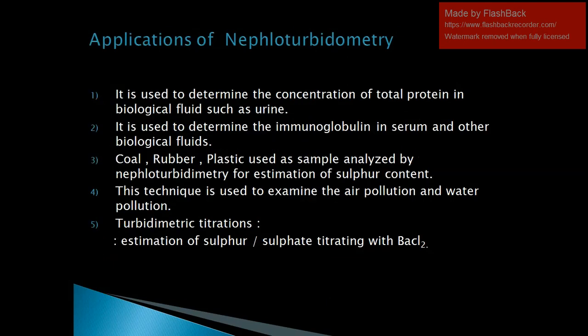Applications of nephroturbitometry: it is used to determine the concentration of total protein in biological fluids such as urine. It is used to determine immunoglobulins in serum and other biological fluids. Coal, rubber, and plastic samples are analyzed by nephroturbitometry for estimation of sulfur content. It is used to examine air pollution and water pollution. Turbidimetric titrations are also carried out, such as estimation of sulfur in which sulfate is treated with BaCl₂.